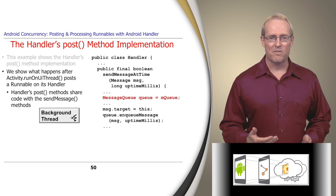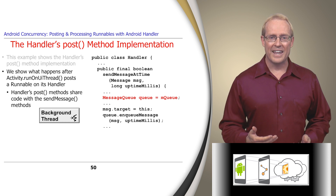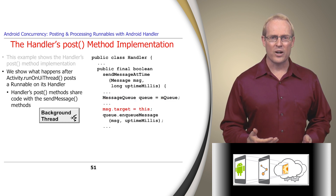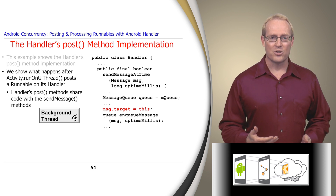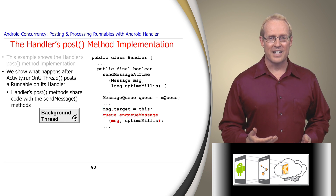The sendMessageAtTime method first stores the thread-specific looper's message queue in a local variable and then sets the target of the encapsulated runnable to be this handler, which the looper uses later to dispatch the runnable's runHook method. Finally, the encapsulated runnable is enqueued on the looper's message queue.